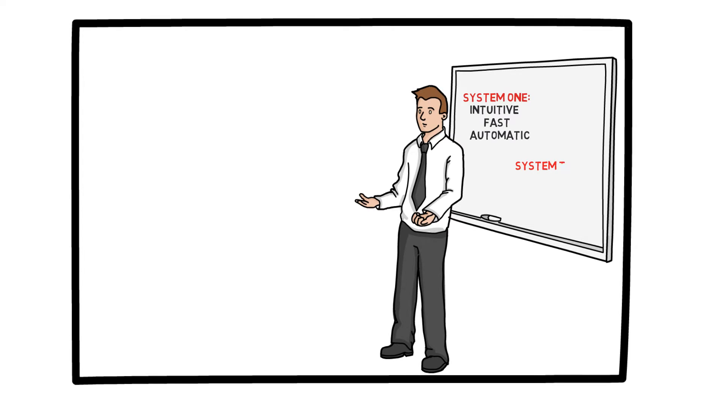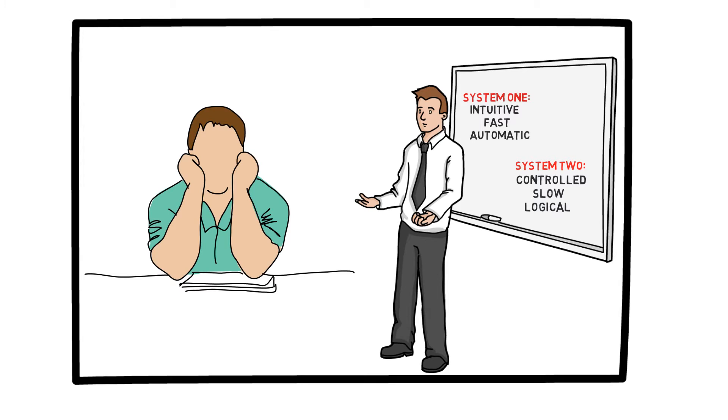On the other hand, we have System 2, which is controlled, slow, and logical. For example, if I give you a non-trivial math problem and ask you to solve it, you sit down and think about how to solve it. This is an example of your System 2 at work.